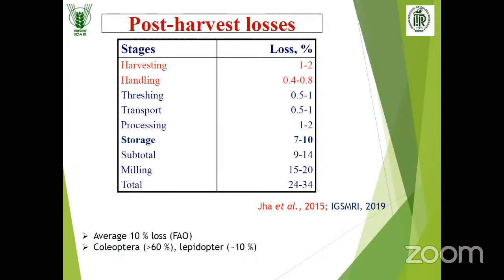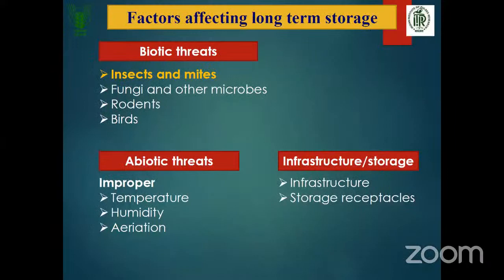Stored grain pests are grouped under two insect orders. The majority is Coleoptera, which contributes more than 60% of the species infesting stored grains and stored products, followed by Lepidoptera, which accounts for nearly 10% of the species infesting stored products.